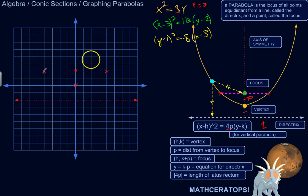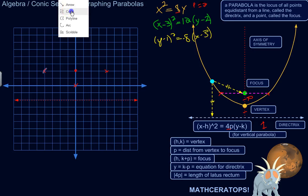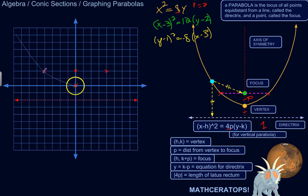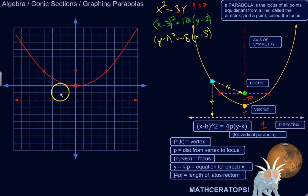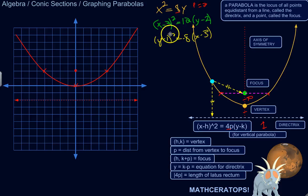With the vertex, focus, and two points on the curve, we can sketch a rough parabola. It won't be perfect — if you need a perfect graph, use a digital graphing tool. But for sketching the basic idea, it's good enough. That was the parabola x squared equals 8y. Now let's do one that's a little more complex and fun — one where the vertex is not at the origin.